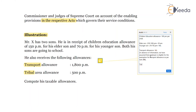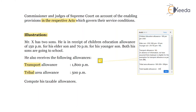Tribal area allowance is exempt up to 200 per month. So 500 minus 200 equals 300 per month which will be taxable in the hands of Mr. X. Total taxable allowance is nothing but 50 per month for children education allowance and 300 per month for tribal area allowance — so 350 per month is the taxable amount. This concludes the solution, wherein total taxable allowances in the hands of Mr. X for the assessment year 2021 is 350 per month.